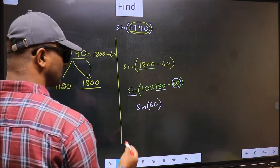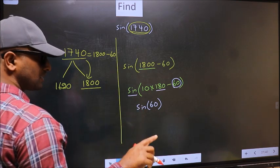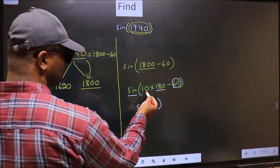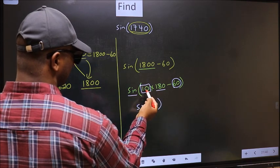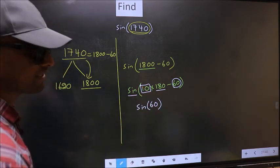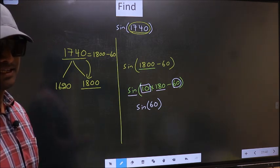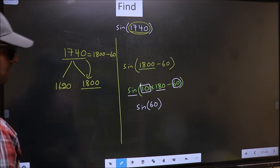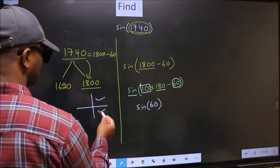Now the question is, will we get here plus or minus? To answer that, you should look at the number before 180. Here we have 10, and 10 is even. And all the even multiples of 180 lie in either the first or the fourth quadrant.